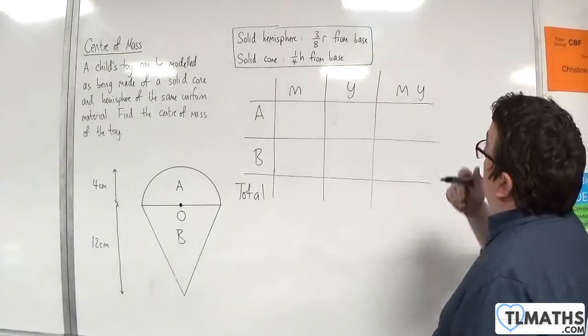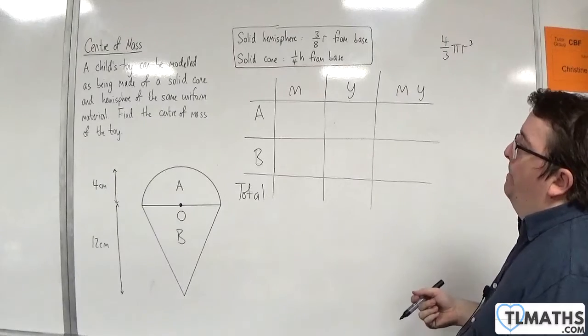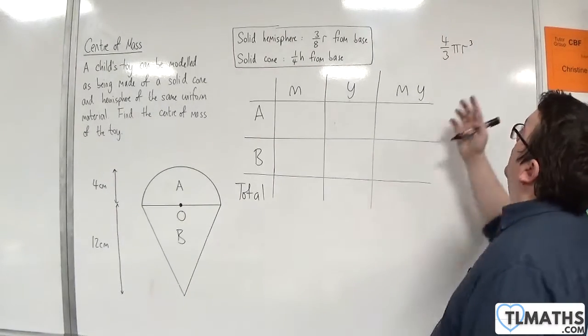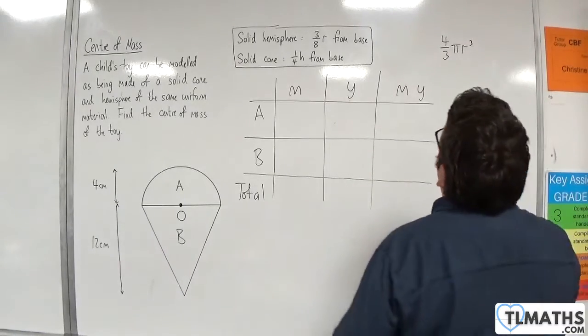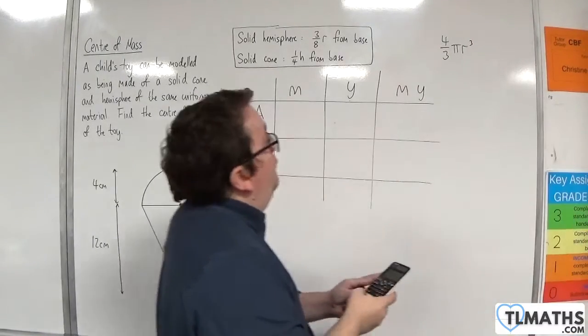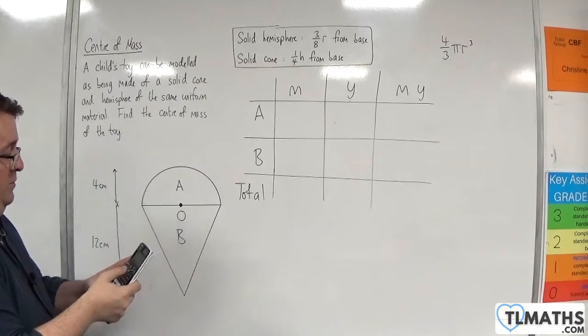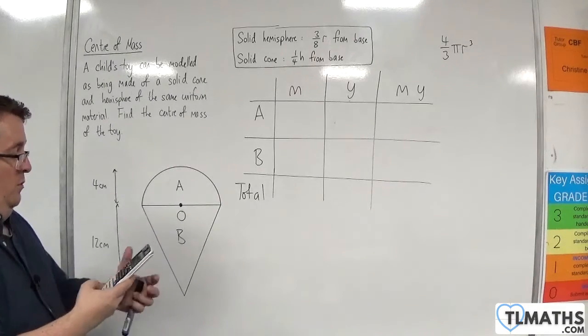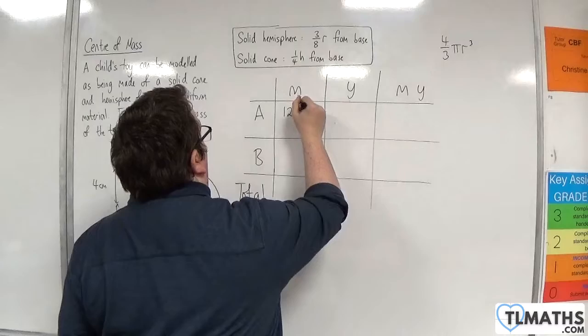Now, the volume of a sphere is 4 thirds pi R cubed. So the volume of the hemisphere is going to be half of that, with R being 4. So we have 4 thirds times by 4 cubed times by pi, and then divide that by 2. So that's 128 pi over 3 K.